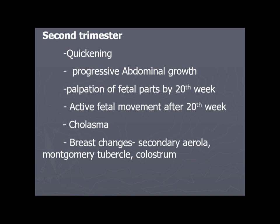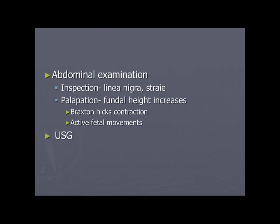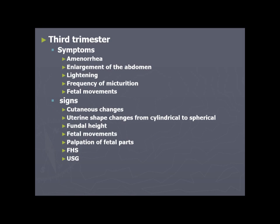Second trimester continued: abdominal examination shows linea nigra, striae gravidarum, progressive fundal height increase, Braxton Hicks contractions, and active fetal movements. Third trimester signs: amenorrhea, enlargement of abdomen, lightening (after 36 weeks, the lower uterine segment expands and the presenting part descends into the pelvis, relieving shortness of breath), followed by urinary frequency again due to presenting part compressing the bladder. Active and visible fetal movements, uterine shape changes from cylindrical to spherical, increasing fundal height, palpable fetal parts, FHS heard by stethoscope, and USG findings.